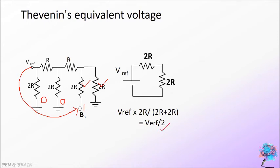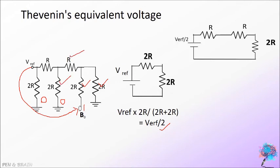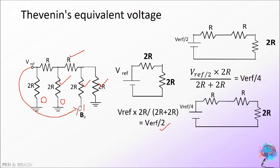So, with this equivalent voltage we can draw the diagram with other resistors available like this. Now, the equivalent voltage across these resistors is V reference by 2 into 2R divided by 2R plus 2R that is V reference by 4. So, we get the final equivalent voltage V reference by 4 into 2R divided by 2R plus 2R that is V reference by 8. So, V reference by 8 is the Thevenin's voltage according to B0 is 1, B1 is 0 and B2 is 0.